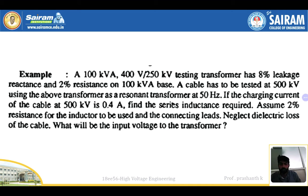Welcome to SIREM Triple E YouTube channel. Let us solve one problem based on a series resonant circuit. The question is: a 100 kVA, 400 volts to 250 kilovolt testing transformer — the transformer rating is 100 kVA, input voltage is 400 volts, and output is 250 kilovolts.